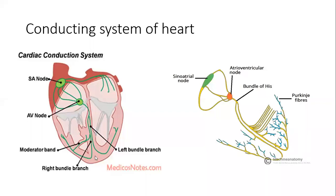For the AV bundle and interventricular septum, the anterior part of the interventricular septum receives its blood supply from the left anterior descending artery (also called the anterior interventricular artery), arising mainly from the left coronary artery. The posterior part of the interventricular septum receives its blood supply from the posterior interventricular artery, which in 67% of the population is a branch from the right coronary artery, and in the remaining 33% from the left coronary artery. This posterior interventricular artery essentially determines the dominance of the coronary system in the heart.